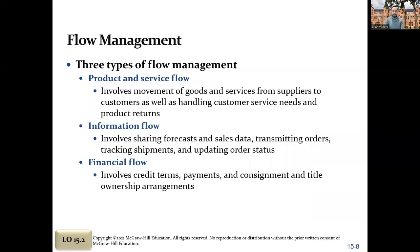Information, products, and finances are the three types of flow management. It's not just the products or services flowing through the supply chain, but also information — sharing forecasts, sales data, updating order status, tracking shipments — and finances: all the payments, credit terms, and title arrangements that go through your finance team.